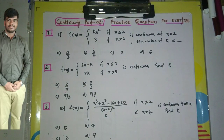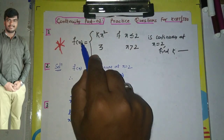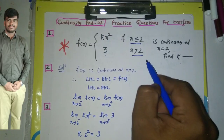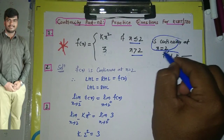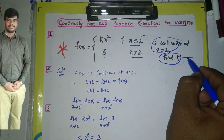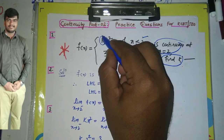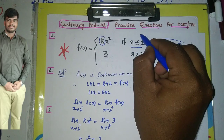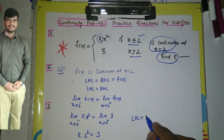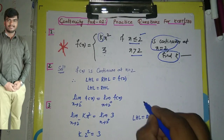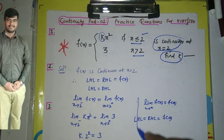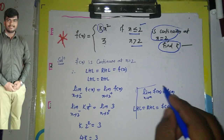Before solving the first question, let us analyze practically what the numerical is. The question is: if f(x) = kx² when x ≤ 2, and 3 when x > 2, and it is continuous at x = 2, find the value of k. Since the function is already given as continuous at x = 2, that means LHL = RHL = f(a). Continuity algebraically means: limit x tends to a of f(x) = f(a).